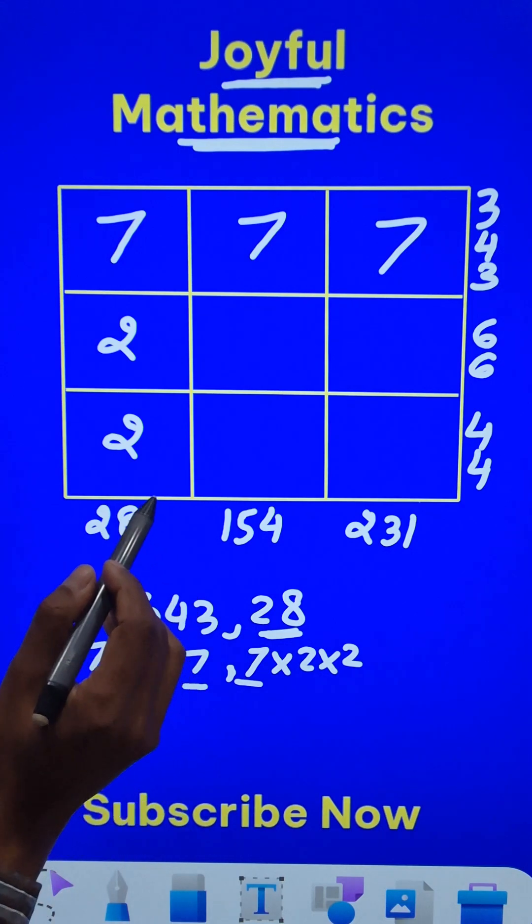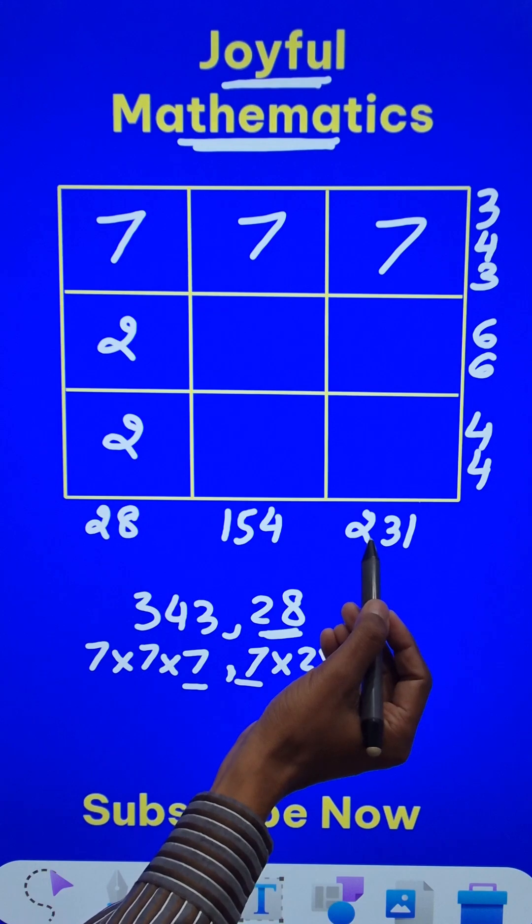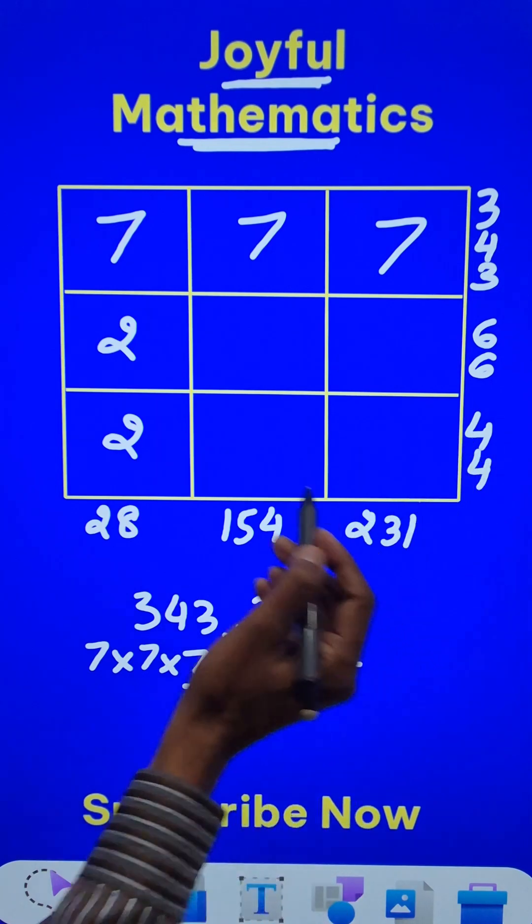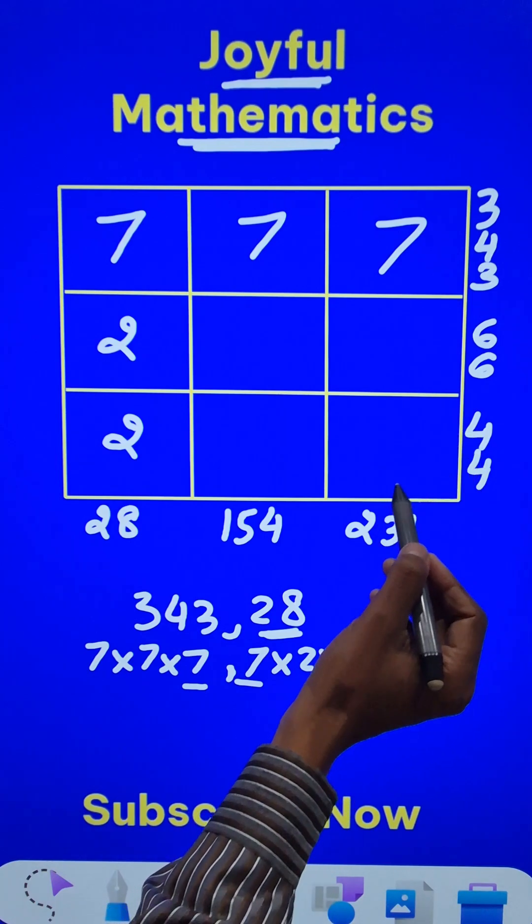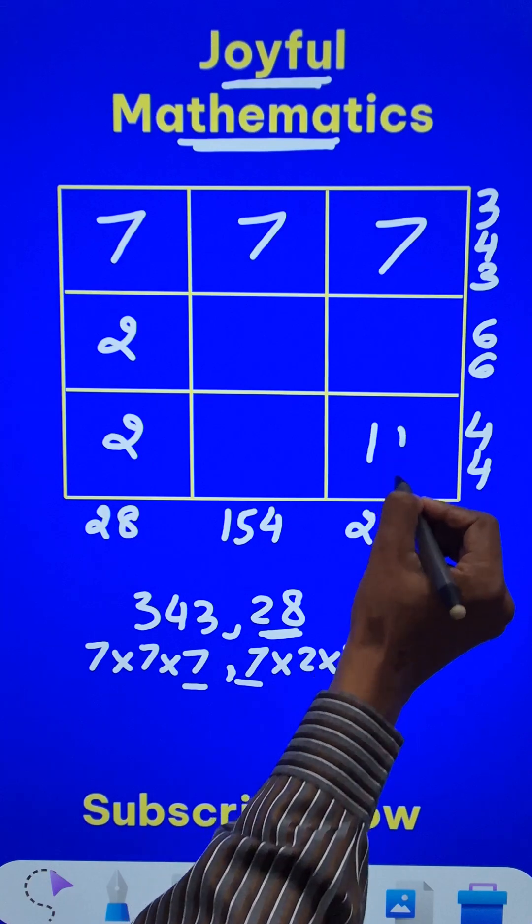Now we need to take care of the numbers here. Now if you see this number 231 and this number 44, they have a common factor 11. And they don't have a common factor 2. And therefore, these two will surely have an 11 here, which is a common factor.